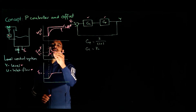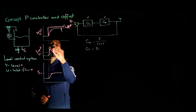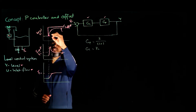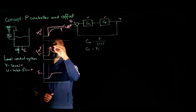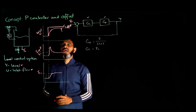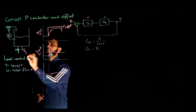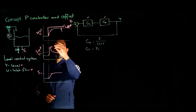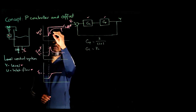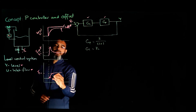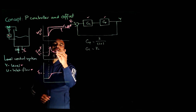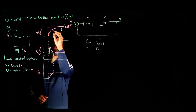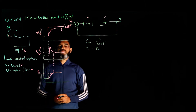The initial proportional control action will be high, and as the output starts to change, the error becomes smaller, so the input will also start to decrease. With the level going up, the outlet flow from the tank will also start to go up. As the inlet flow decreases and the level increases, the outlet flow keeps increasing until at some point the inlet flow equals the outlet flow, and the level becomes constant.